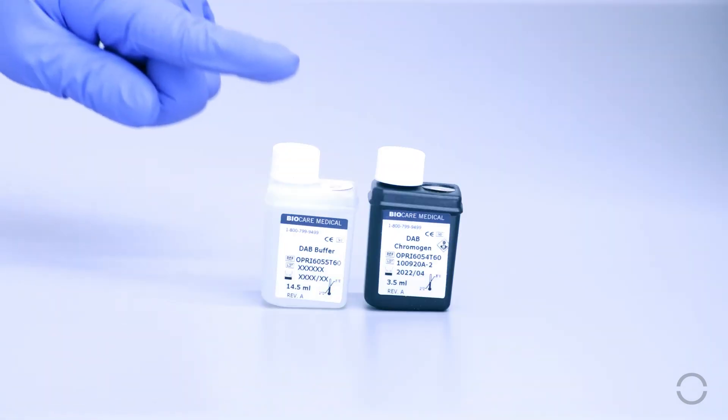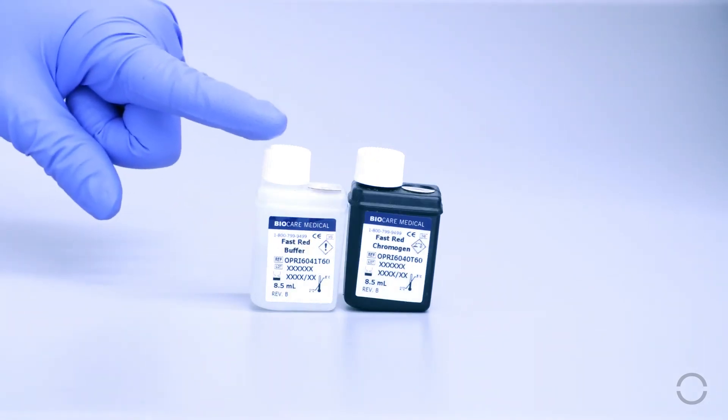The Encore Pro DAB chromogen kit consists of two solutions. The fast thread chromogen kit also consists of two solutions.